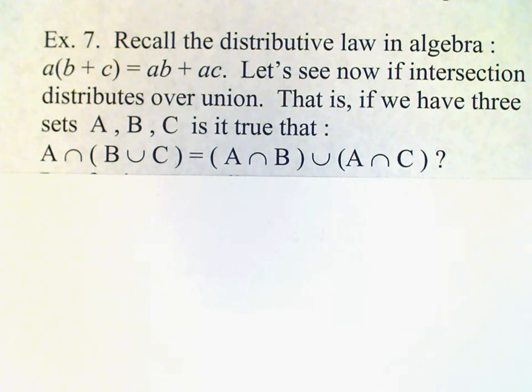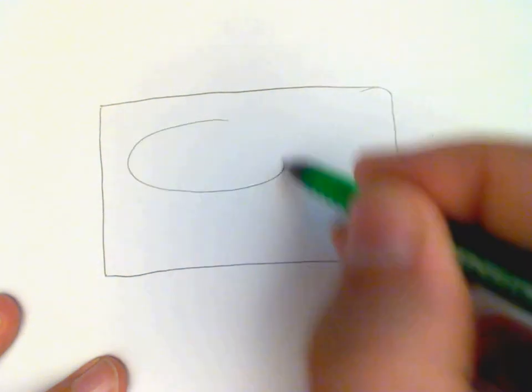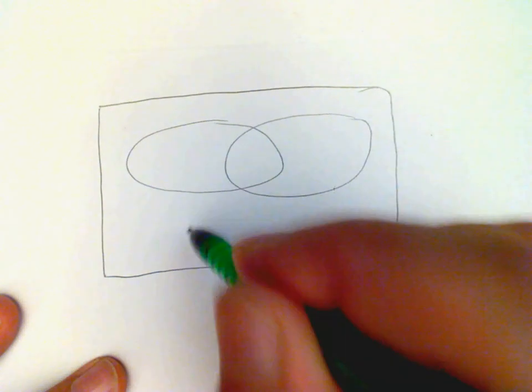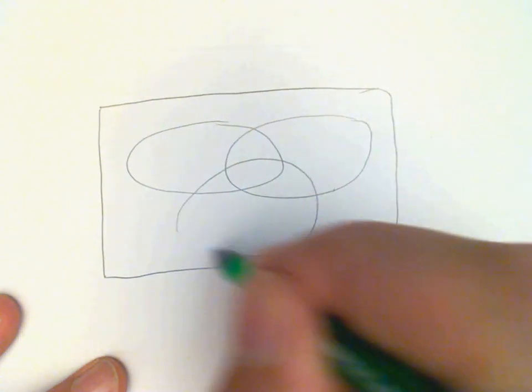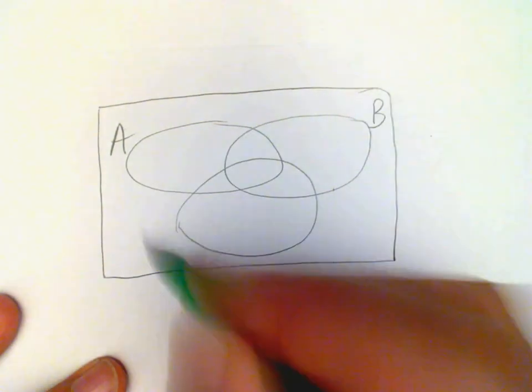And one way that we can show this is with a Venn diagram. So I'm going to draw a three set Venn diagram. So there's my A, B, and C.